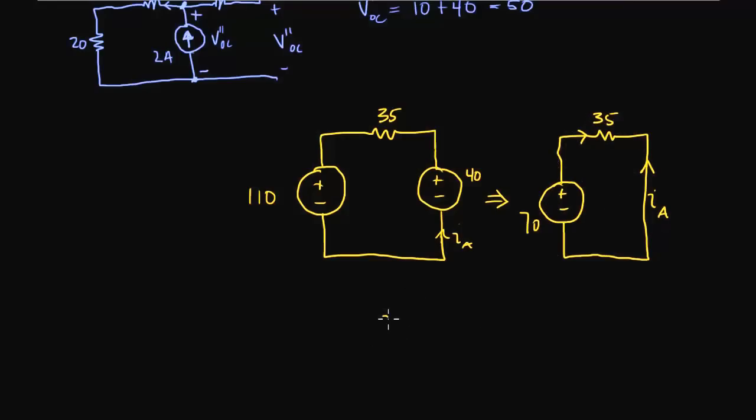And let's call this I. Negative IA equals I, which equals 70 divided by 35, which equals 2 milliamps. Or, oops, 2 amps, right? 2 amps.